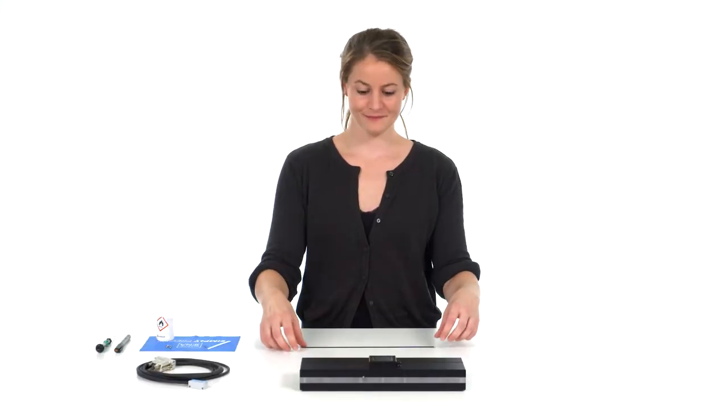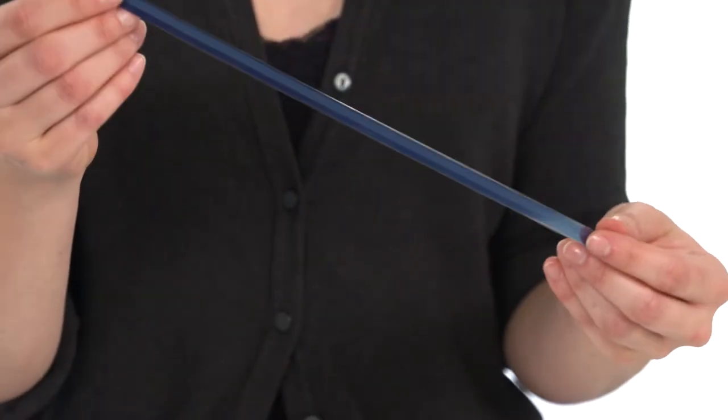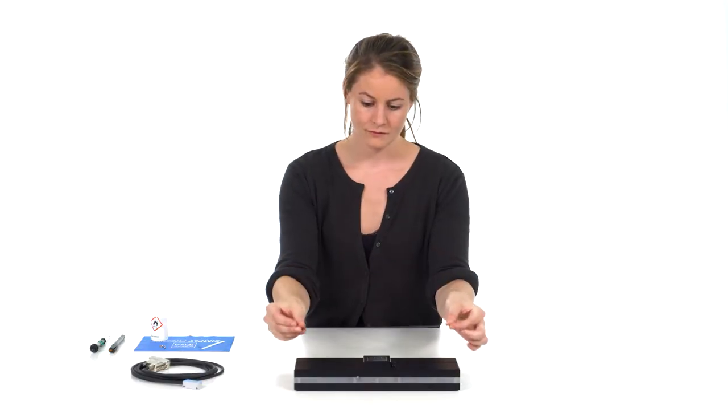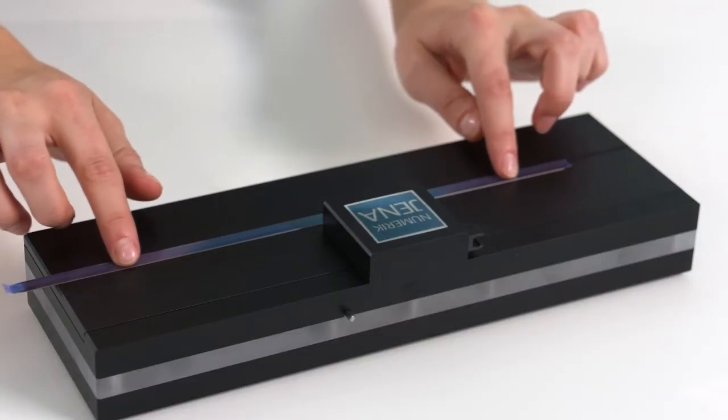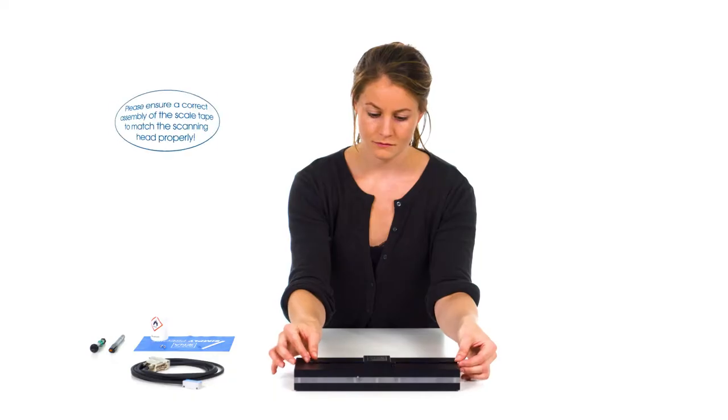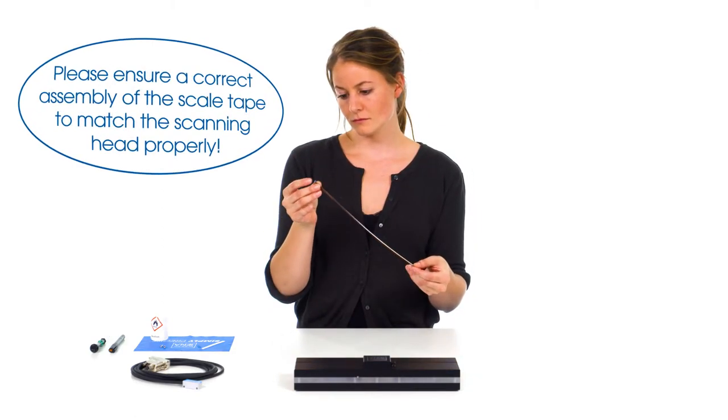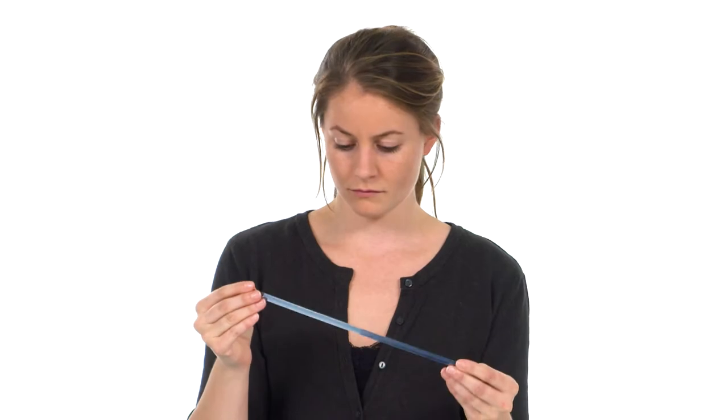In the next step, the scale tape is mounted. This can be done in different ways. The simplest way is to mount the scale tape in a groove provided for this purpose. The scale tape comes with double-sided adhesive tape as standard and can simply be glued to the machine ground.